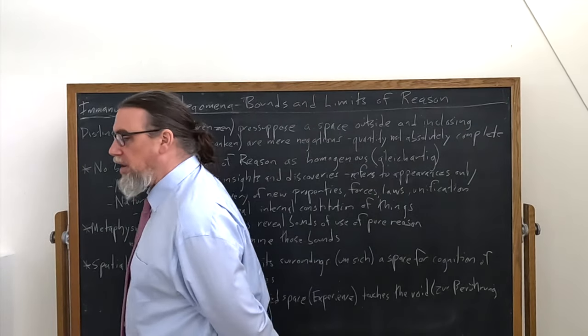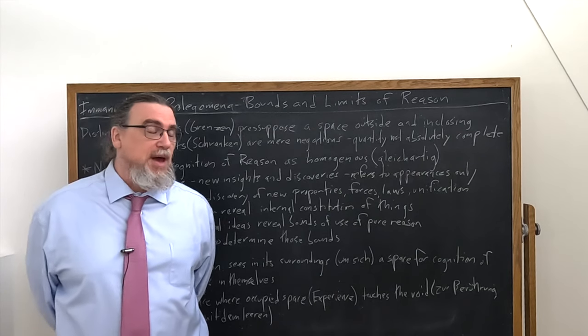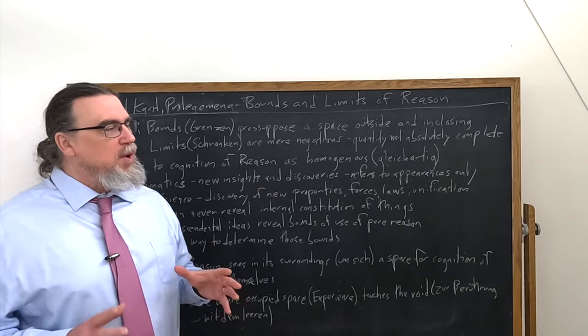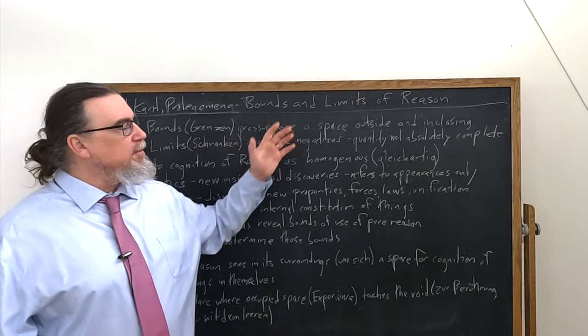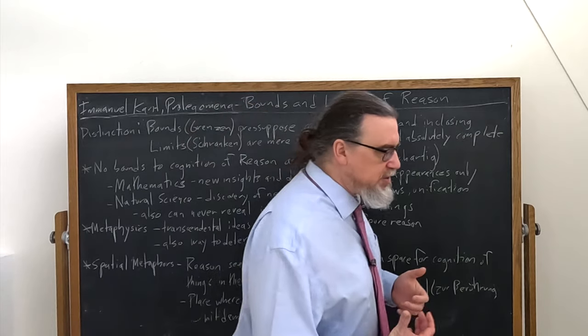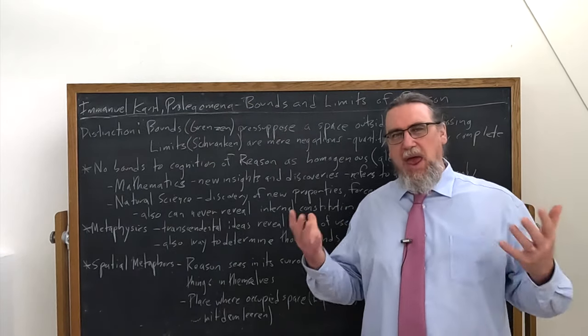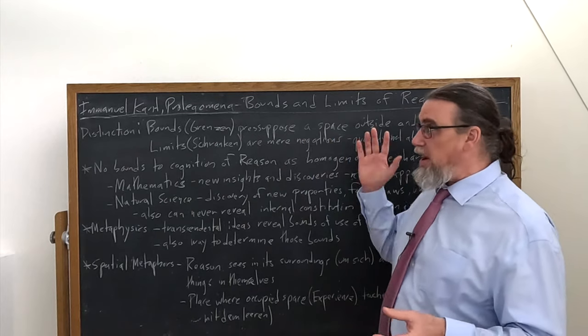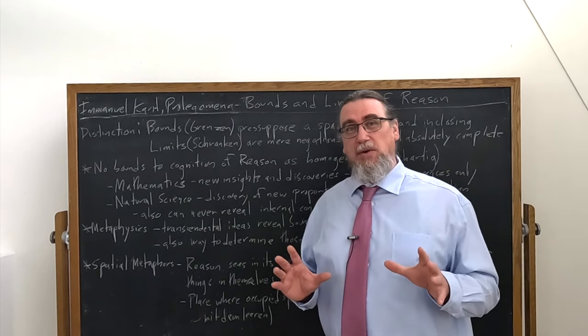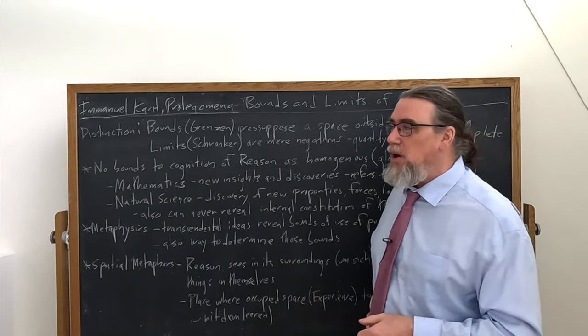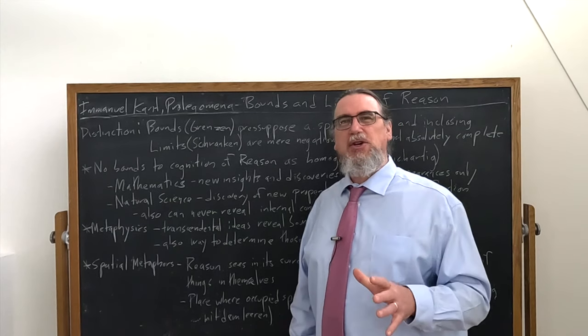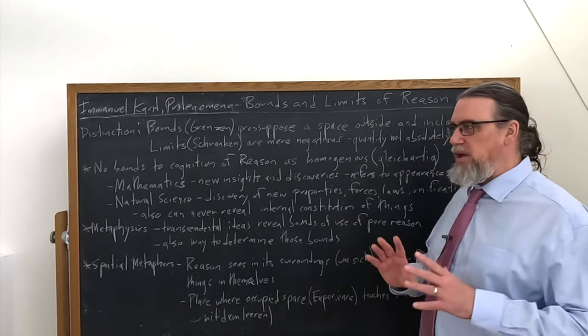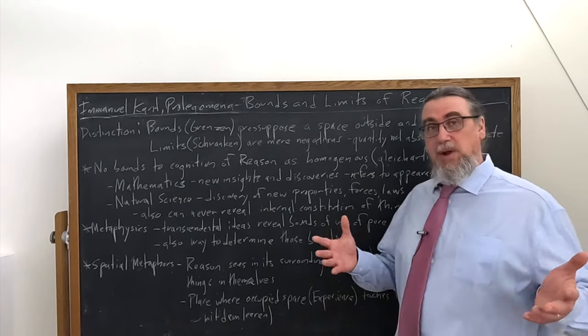In the conclusion to part three of his Prolegomena to Any Future Metaphysics, Immanuel Kant brings up an important distinction between bounds and limits of reason. Not every use of reason will actually have both of these, and Kant will interestingly use spatial metaphors to bring this across.